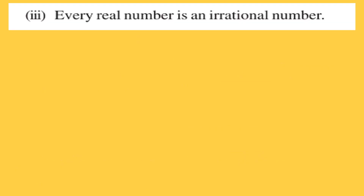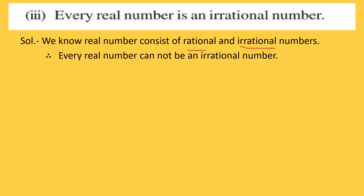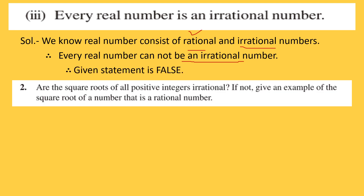The third statement is: every real number is an irrational number. We just discussed that real numbers consist of both rational and irrational numbers, so a real number can be rational or irrational. It is not compulsory that every real number will be irrational — it can be rational also. Therefore this statement is false.